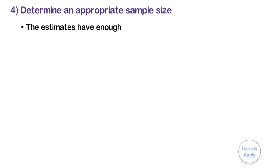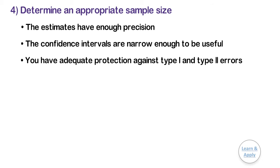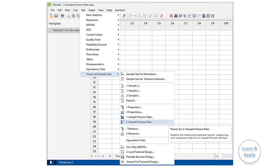Determine an appropriate sample size. Your sample size should be large enough so that the estimates have enough precision, the confidence intervals are narrow enough to be useful, and you have adequate protection against type 1 and type 2 errors. To determine the appropriate sample size for your hypothesis test, go to Power and Sample Size for Two Sample Poisson Rate.